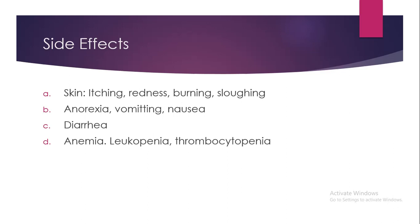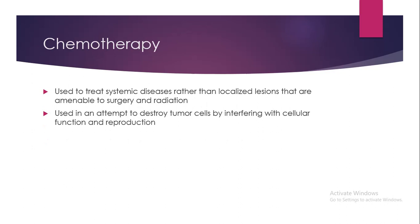Chemotherapy is used to treat systemic disease rather than localized lesions amenable to surgery and radiation. It is used to destroy tumor cells by interfering with cellular function and reproduction. Chemotherapy may be given in many ways: by injection into the muscle (arm, thigh, or hip) or under the skin; intra-arterially — directly into the artery feeding the tumor; intraperitoneally — directly into the peritoneal cavity containing the intestines, stomach, liver, and ovaries; intravenously; topically as a cream rubbed onto the skin; or orally in pills, capsules, or liquid.